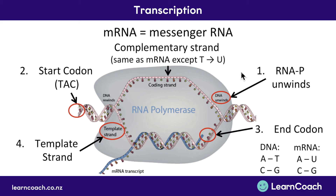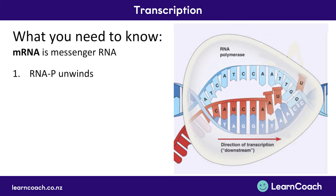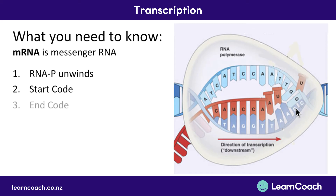This is everything you need to know for transcription. Looking at a summary diagram: mRNA is messenger RNA — a message taken out of the nucleus into the cell to make a protein. RNA-P is the enzyme that unwinds the DNA so one strand can be read. There is a start code telling the protein when to begin making mRNA, and an end code telling it when to stop.